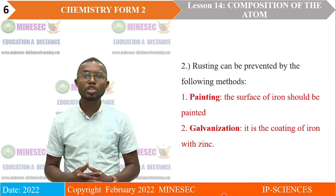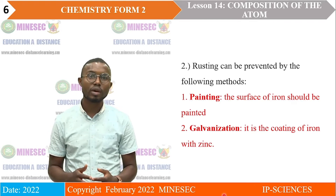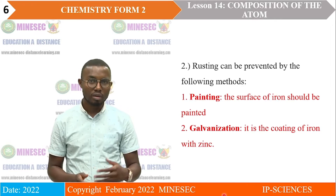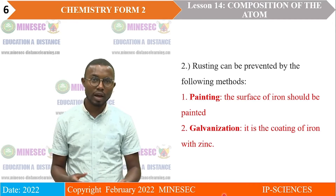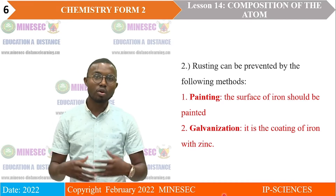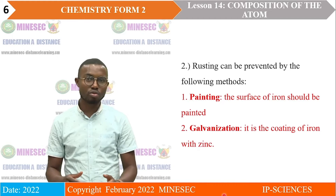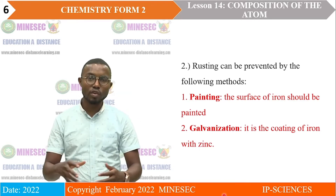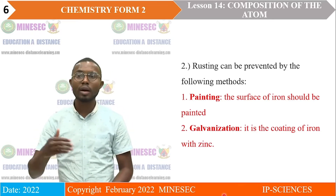Rusting can be prevented by the following methods. The first method is painting — applying a surface coat of aluminium paint on the iron. The next method is galvanization, which is a coating of iron with zinc. Zinc is resistant to corrosion, so we coat the surface of iron with zinc to prevent rusting.